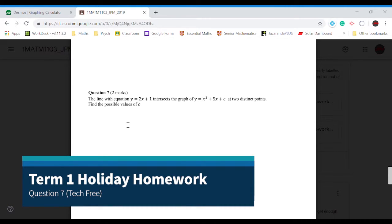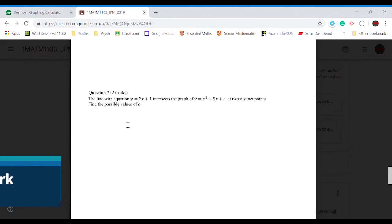Question 7 is asking for when the line y equals 2x plus 1 intersects a graph of y equals x squared plus 5x plus c at two distinct points.